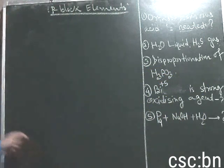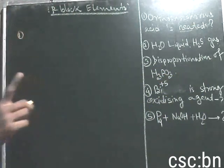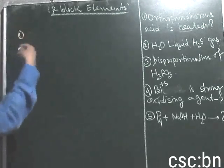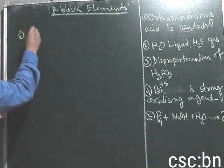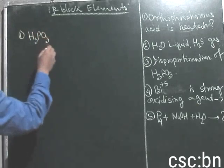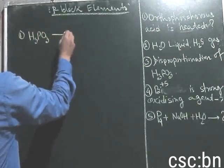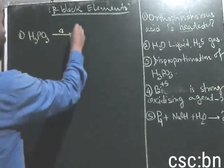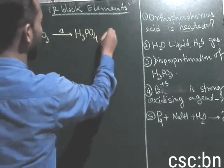So the answer is: the formula for orthophosphorous acid is H3PO3. If we heat it and it grows, then we get orthophosphorous acid converting to H3PO4 plus other products.